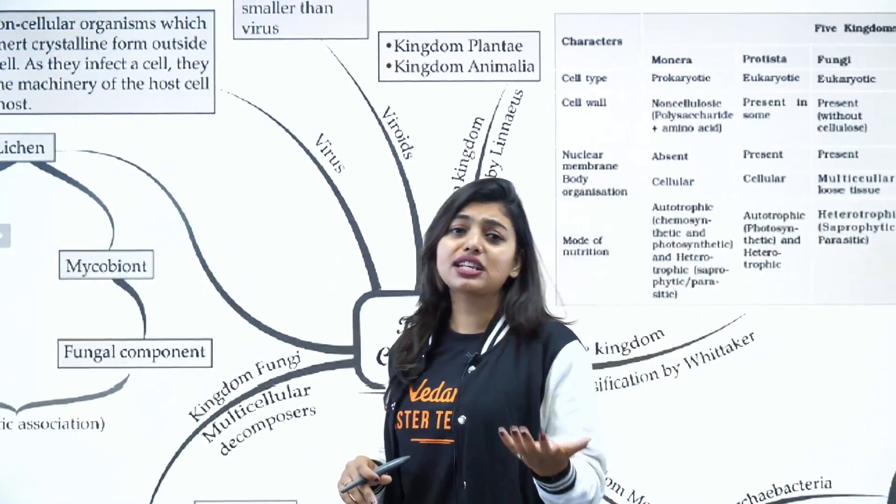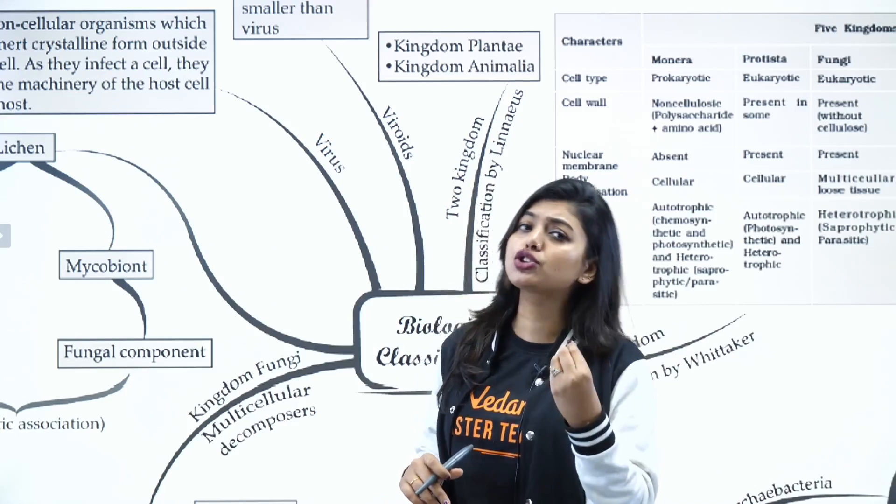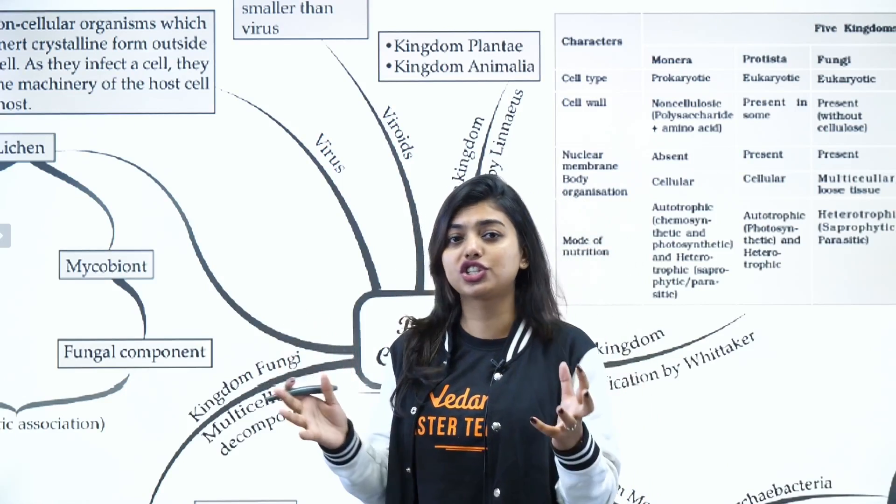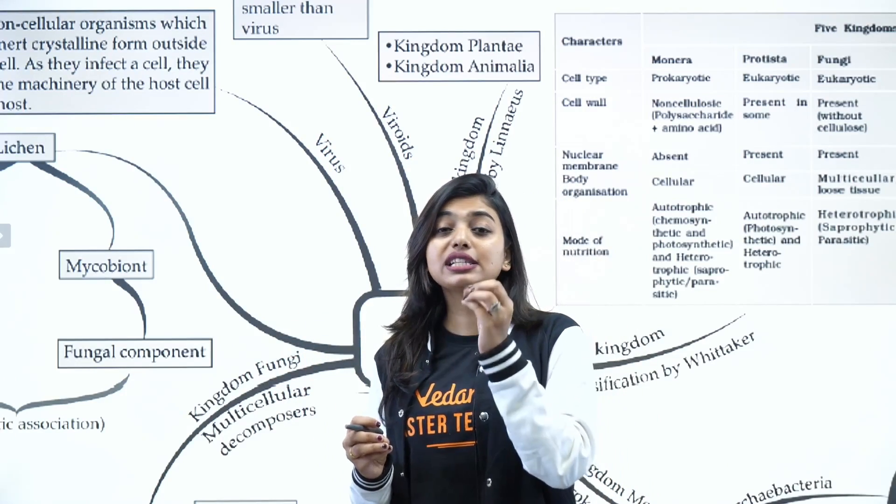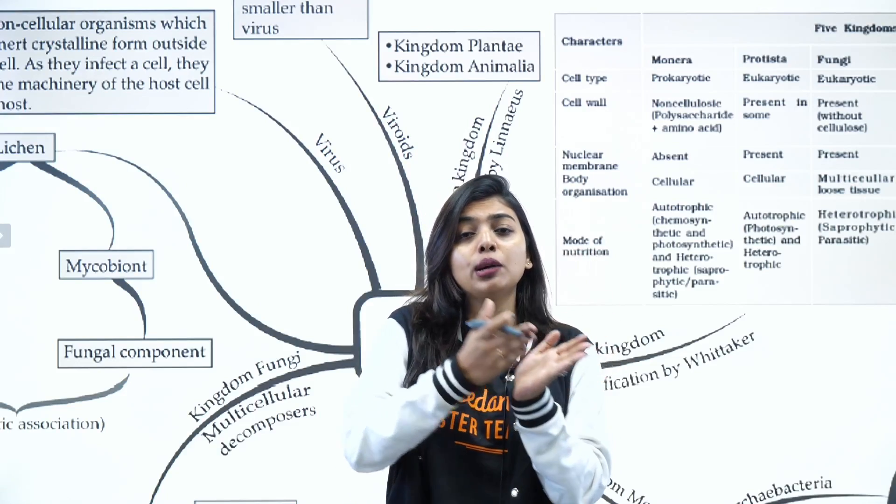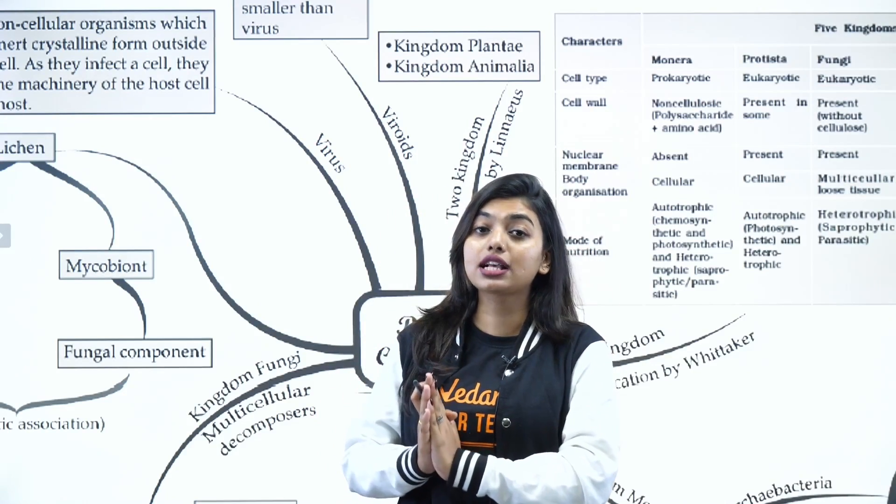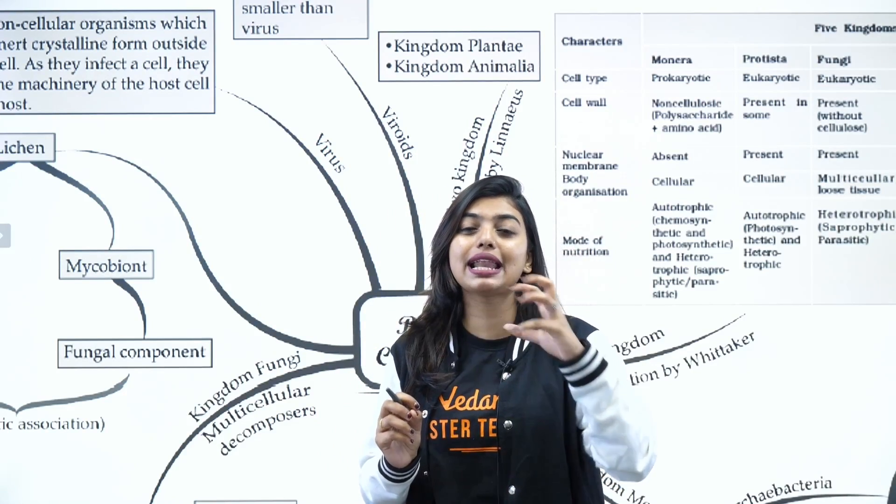But that classification completely failed because most of the botanists and zoologists rejected this. Why? He classified plants depending on herbs, shrubs, and trees, and then he classified animals depending on the presence and absence of RBC.